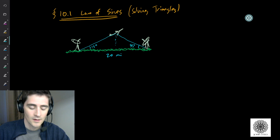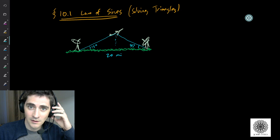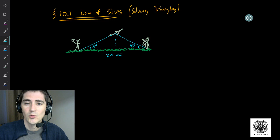But now, what if we look at a non-right triangle? Non-right triangles show up a lot in the real world. Here's just an example from the book — we're using OpenStax's Algebra and Trigonometry textbook.